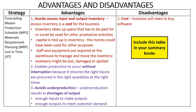Another advantage of all four strategies is that they enable production to run without interruption, because they ensure that the right inputs are procured in the right quantities at the right times. A final common advantage is that they help avoid underproduction, which results in shortages of output and means the business is not satisfying customer demand. These strategies avoid underproduction by ensuring the business has enough inputs to make outputs and enough outputs to meet customer demand.